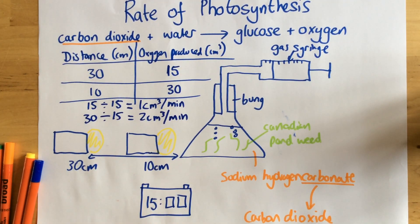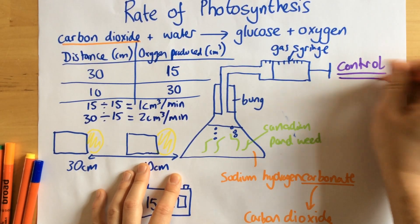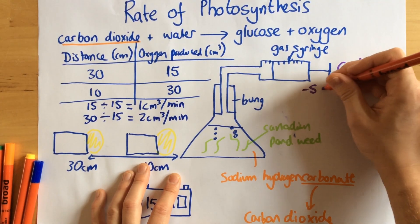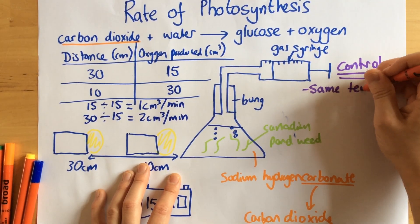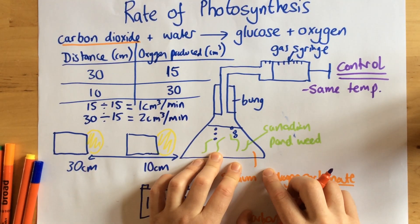The final things we need to talk about are control variables. So these are the things we need to keep the same to keep it a fair test. So first of all, we want it to be the same temperature. What we could do to control that is to have some kind of water bath.